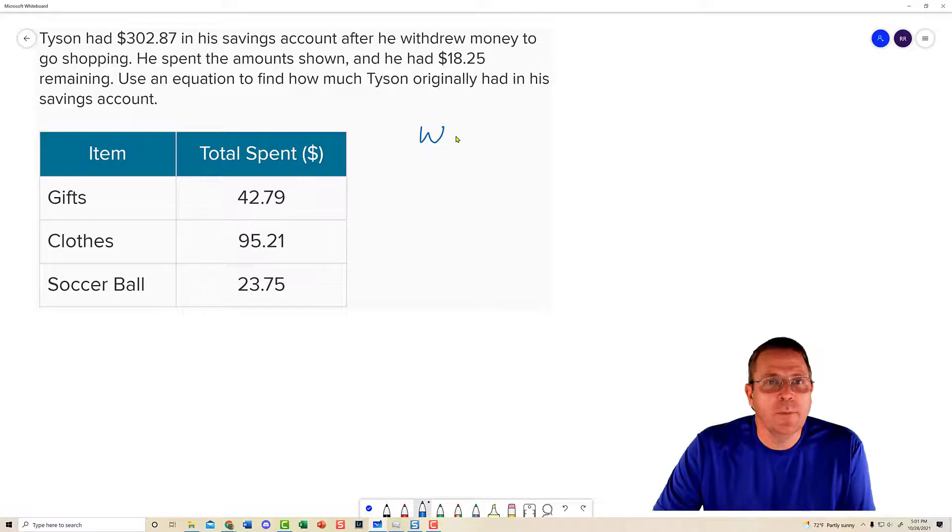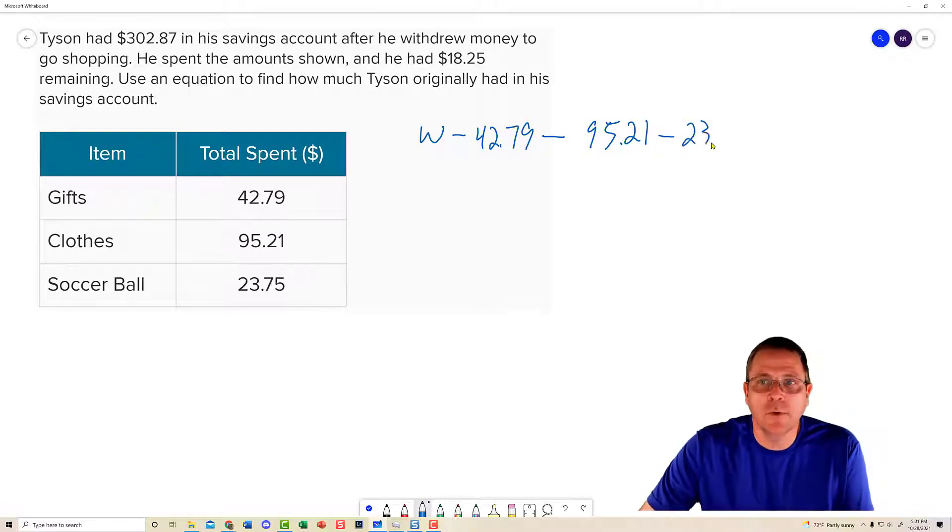From that chunk of money he had, he spent $42.79. And he spent another $95.21. And he spent another $23.75. And how much did he have left? He had $18.25 left.